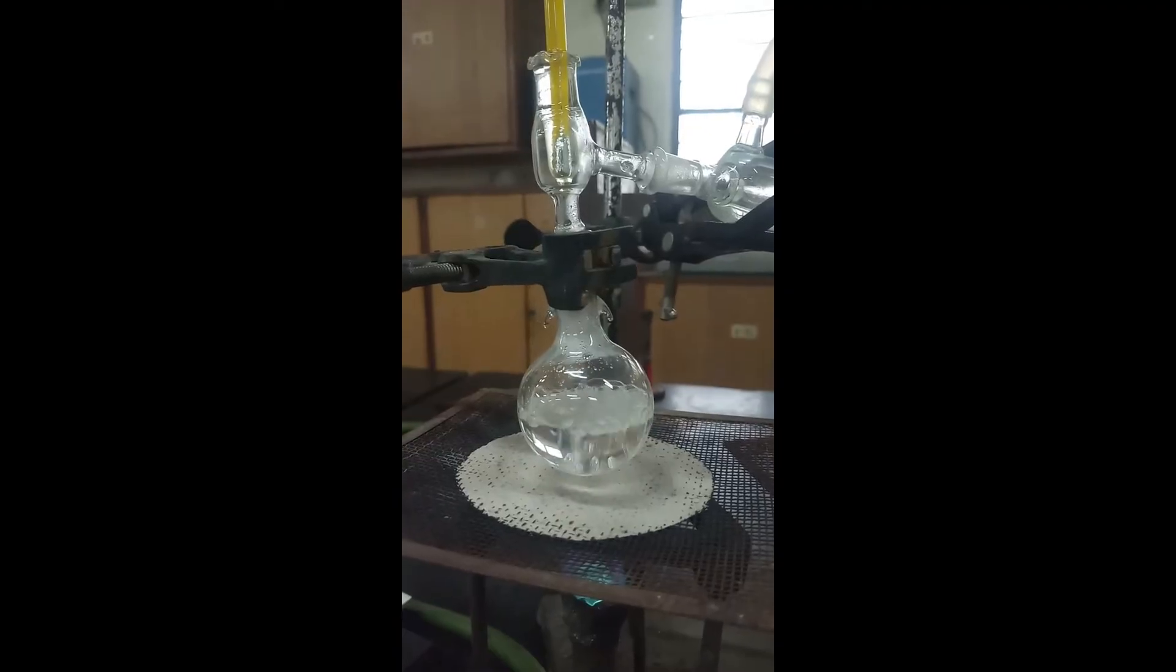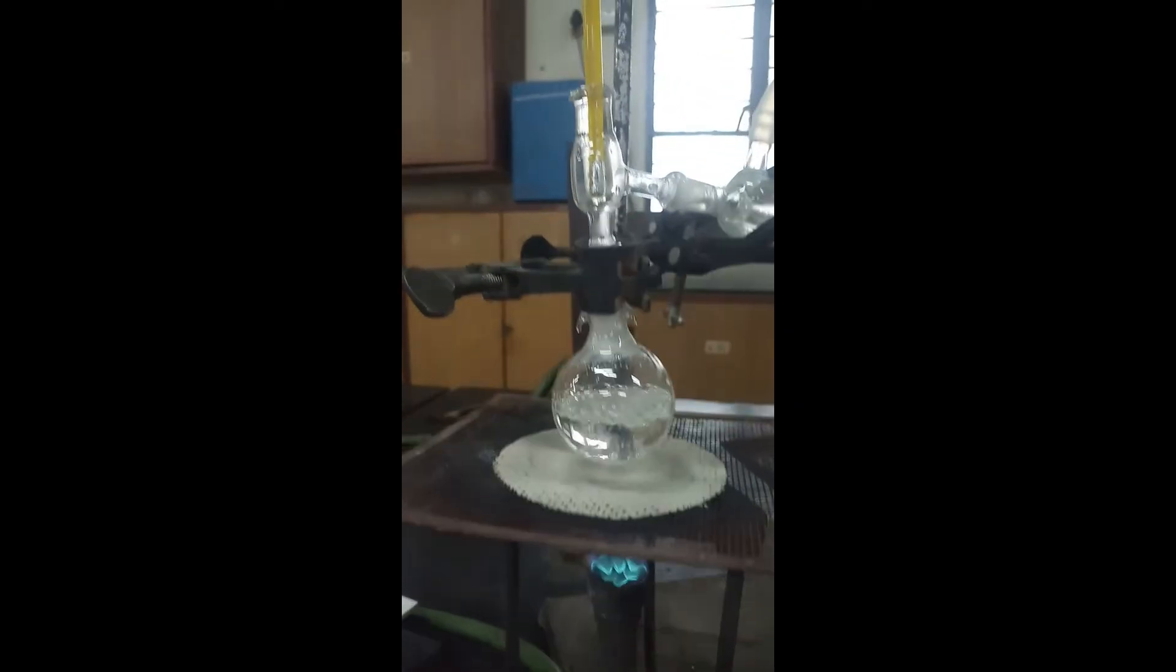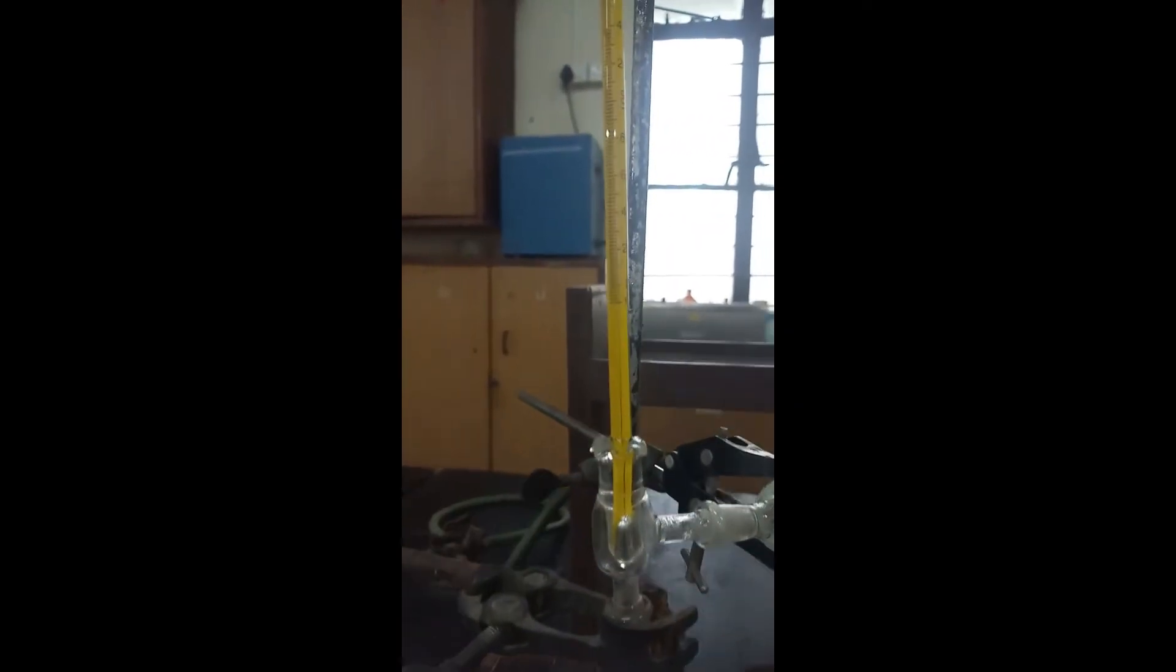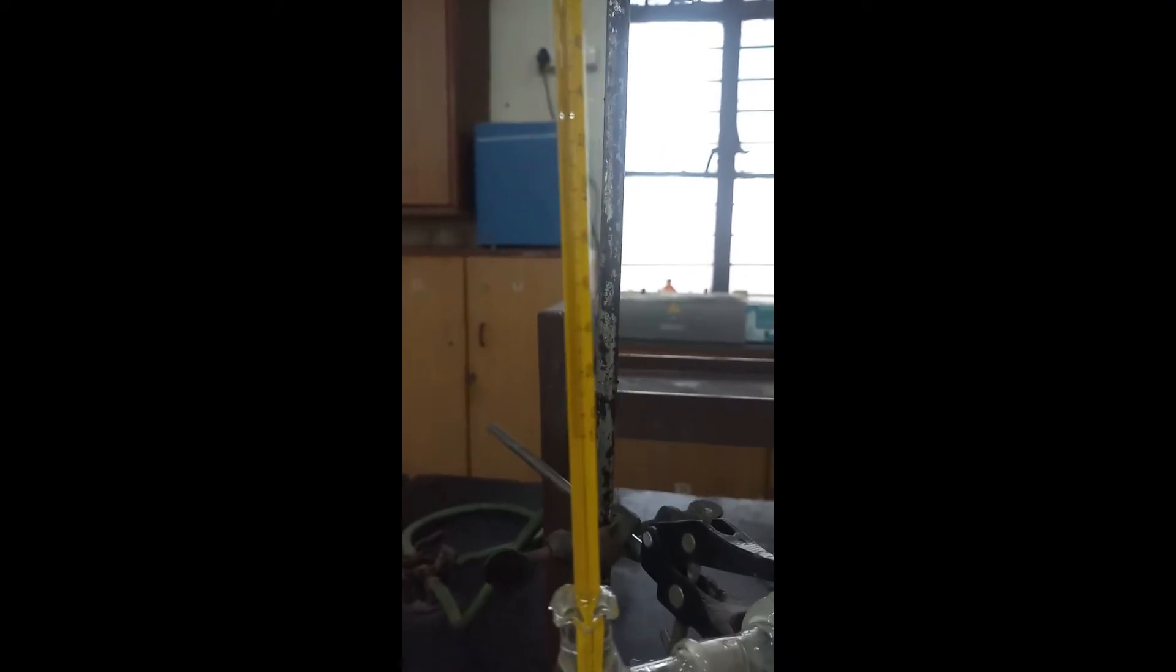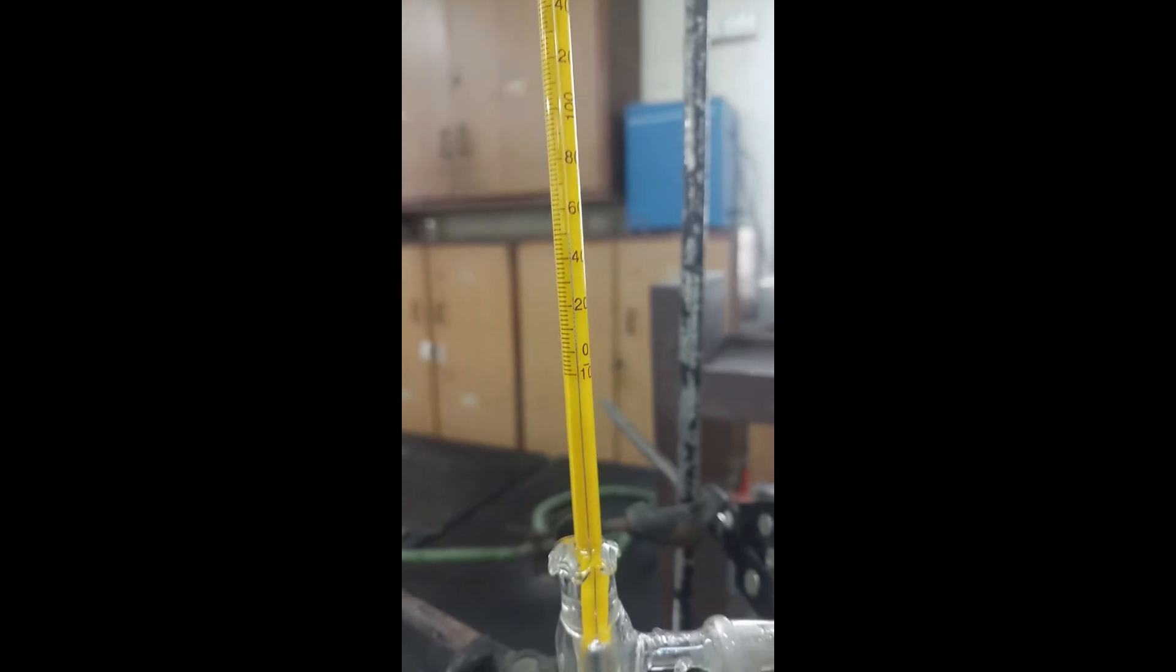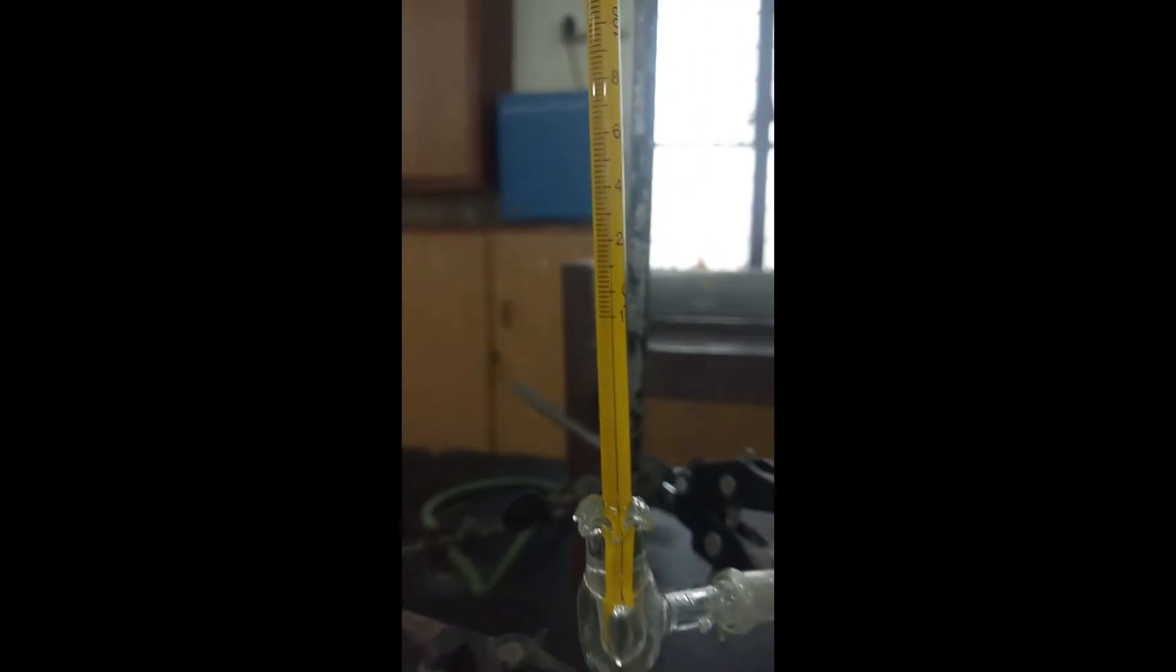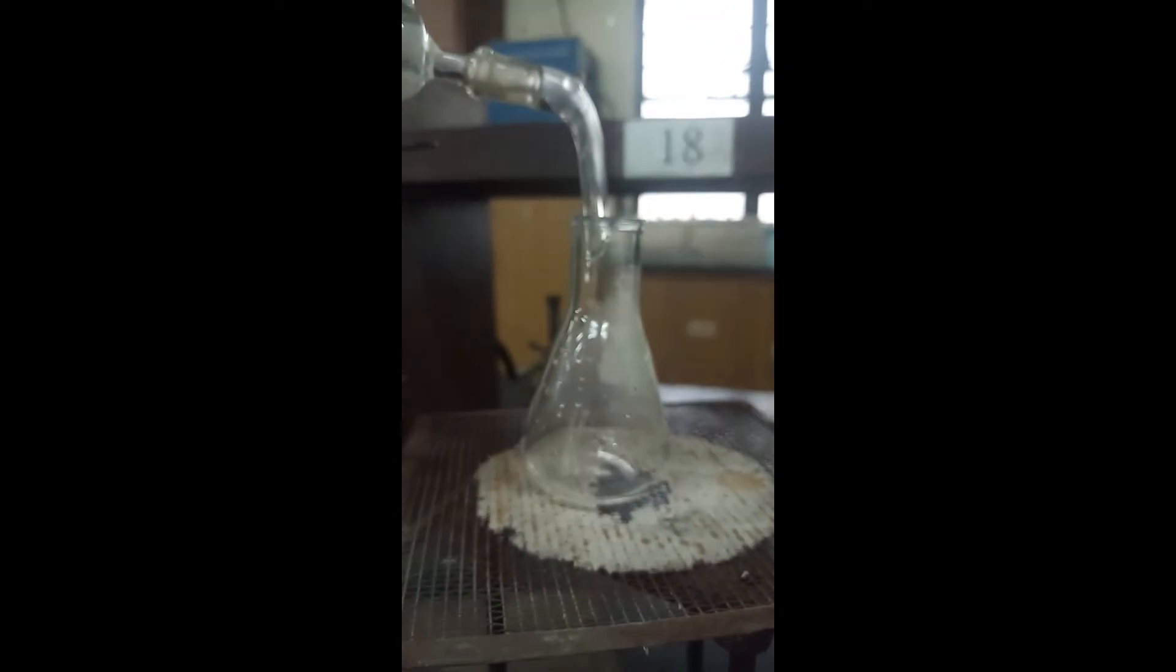Once the temperature reaches the boiling temperature of acetone, or one of the components which can be seen through this thermometer, the first component from the mixture has started boiling. That is the acetone, and it started getting collected in the receiver flask.